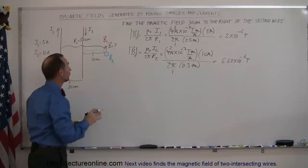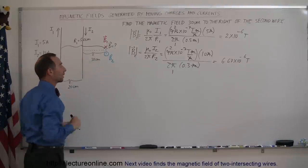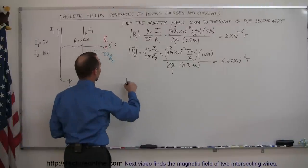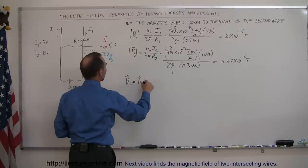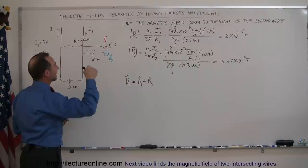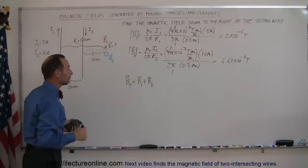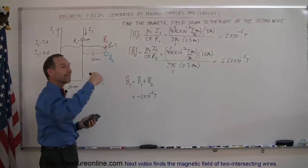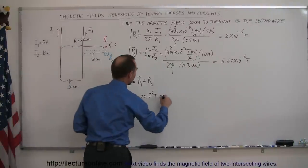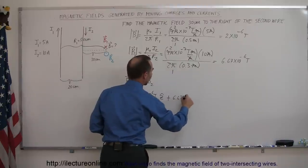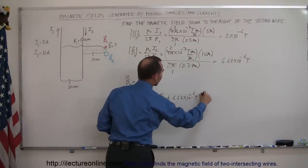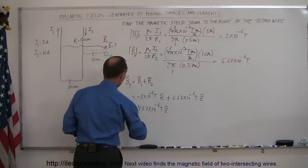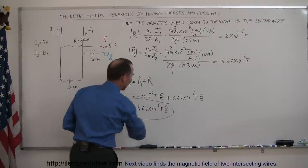Notice the magnitude of the magnetic field caused by the second wire is much larger than that caused by the first wire. So the net magnetic field direction will be in the same direction as the larger field. B-total equals B1 plus B2. B1 is into the board — call that negative z: −2×10⁻⁶ T. B2 is out of the board — call that positive z: +6.67×10⁻⁶ T. The sum is 4.67×10⁻⁶ teslas in the positive z direction.